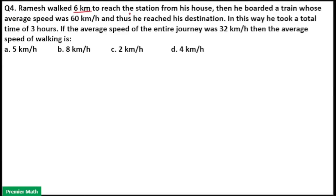Ramesh walked 6 km to reach the station from his house. Then he boarded a train whose average speed was 60 km per hour and thus he reached his destination. In this way, he took a total time of 3 hours. If the average speed of the entire journey was 32 km per hour, then the average speed of walking is?